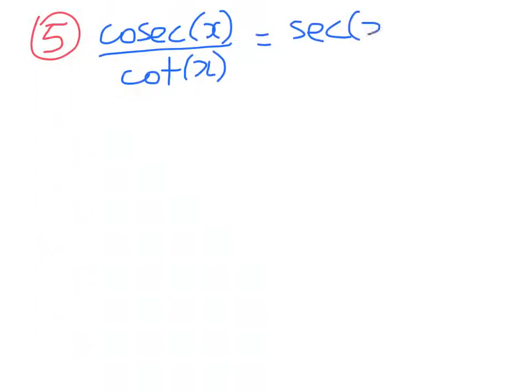Right, number five. We want to prove that cosec(x) divided by cot(x) is equal to sec(x). So we start on the left and we work towards the right. Right, write out what it is you're manipulating. So there's that.